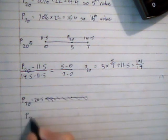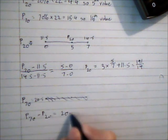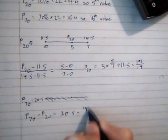So then P70 minus P20 is 20.5 minus 191 over 14, which gives me 48 over 7, which is then 6.86 to 3 significant figures.